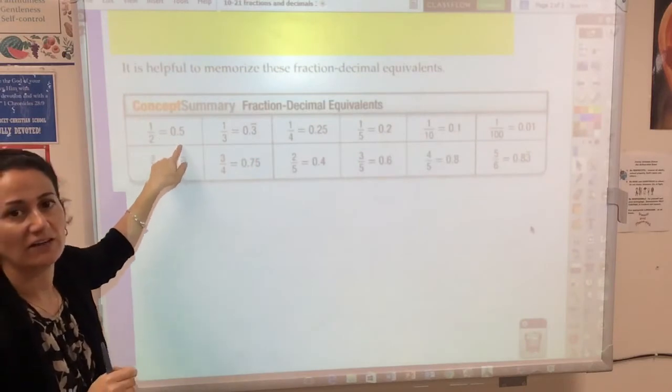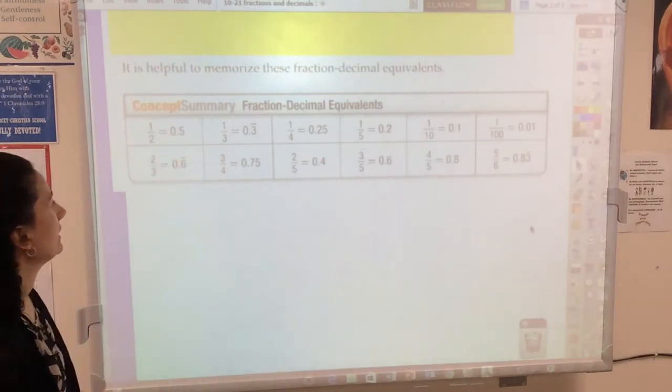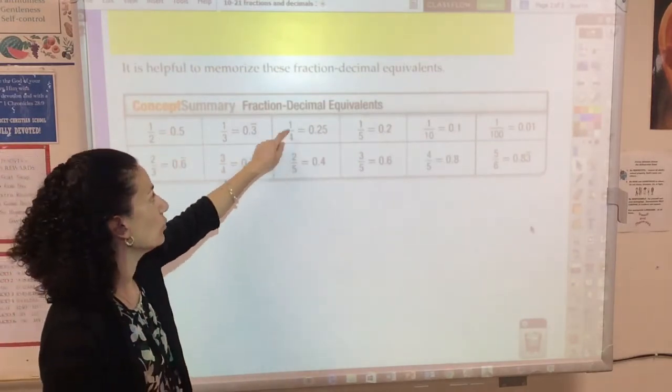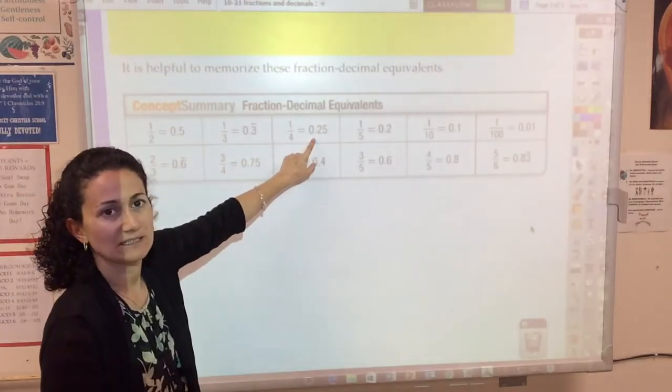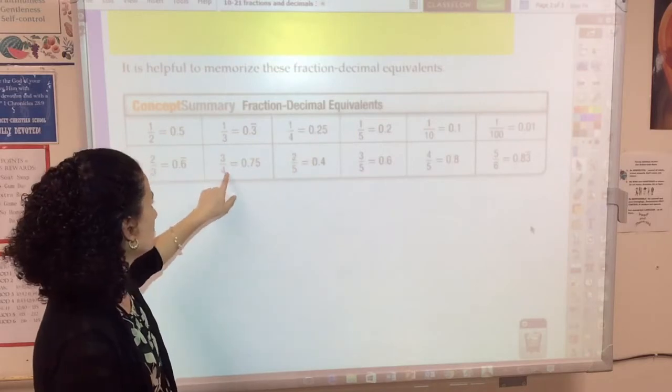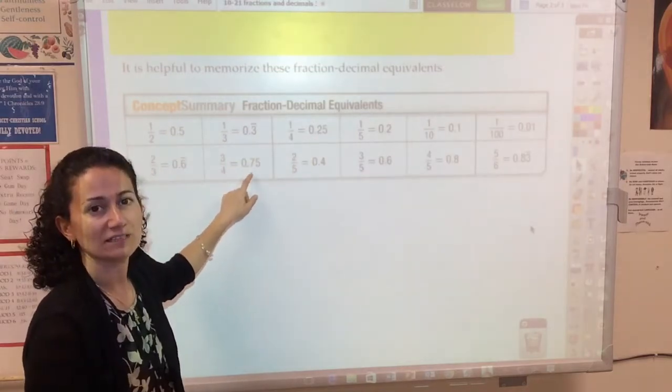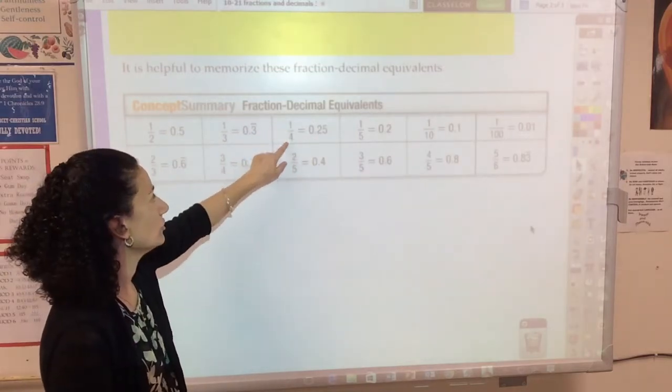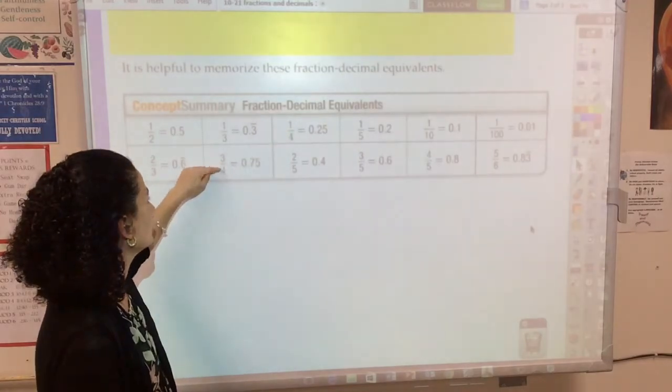1/2 is 0.5. I think most of us know that by now. 1 quarter, 1/4, I think of money. That's like 25 cents: 0.25. 3 quarters is 0.75, like 75 cents. 1 quarter, 1 fourth, 3 quarters, 3 fourths.